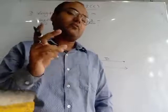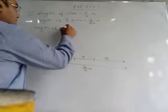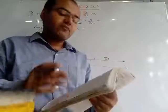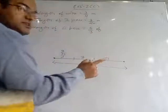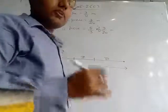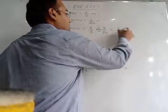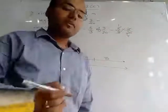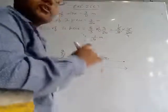Since 5/3 is a fraction, we multiply it with the length of the 1st piece: 5/3 multiplied by 3/20. The 3s cancel and the 5 and 20 cancel as well. On multiplying we get 1/4 meter. So the length of the 2nd piece is 1/4 meter.